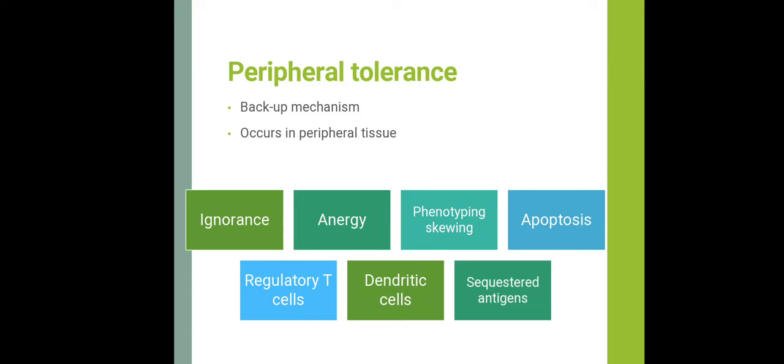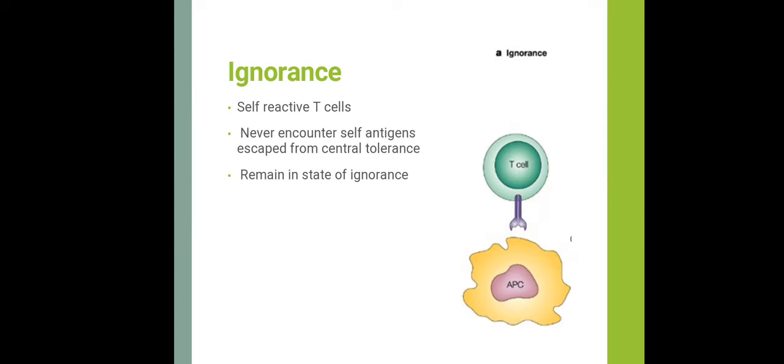Peripheral tolerance provides several backup mechanisms in peripheral tissue to counteract self-reactive T-cells that escape central tolerance. These mechanisms include: ignorance, anergy, phenotypic skewing, apoptosis, regulatory T-cells, dendritic cells, and sequestered antigens. Under ignorance, self-reactive T-cells may never encounter the self-antigen they recognize and therefore remain in a state of ignorance.